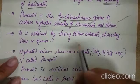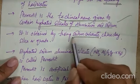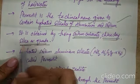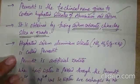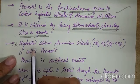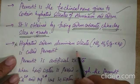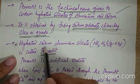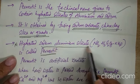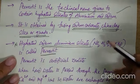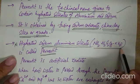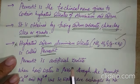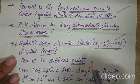Permutite can be obtained by using sodium carbonate, China clay, and silica or quartz. Hydrated sodium aluminium silicate is called permutite. The permutite formula is Na2Al2Si2O8·xH2O. Artificially prepared permutite is called zeolite.